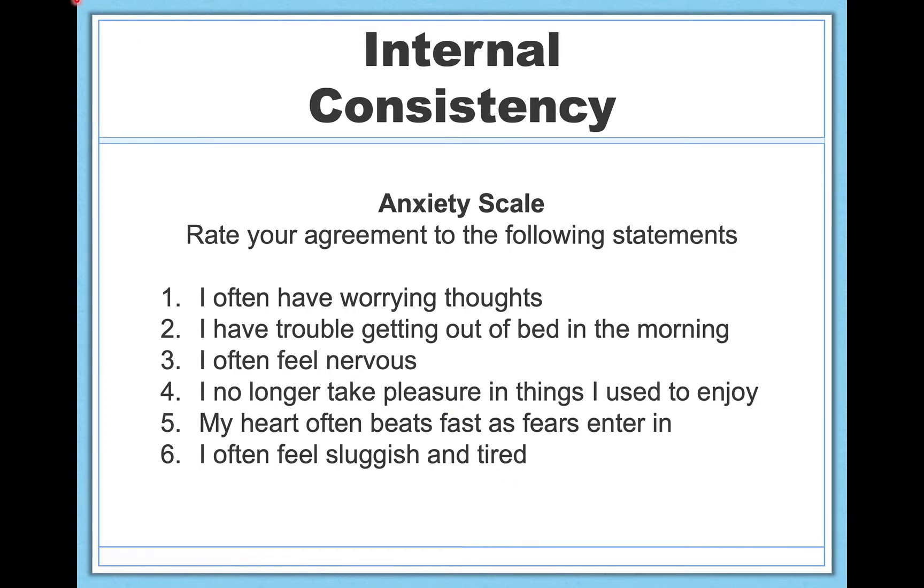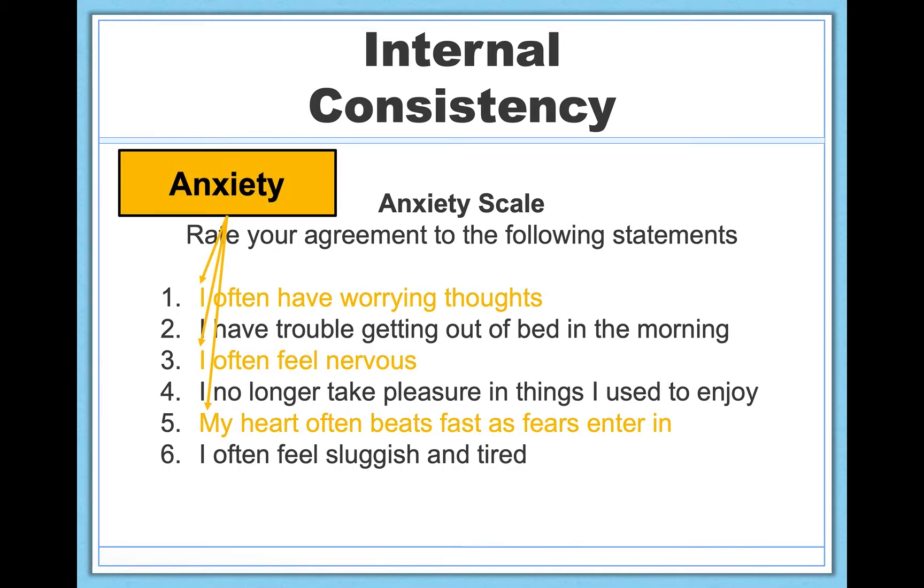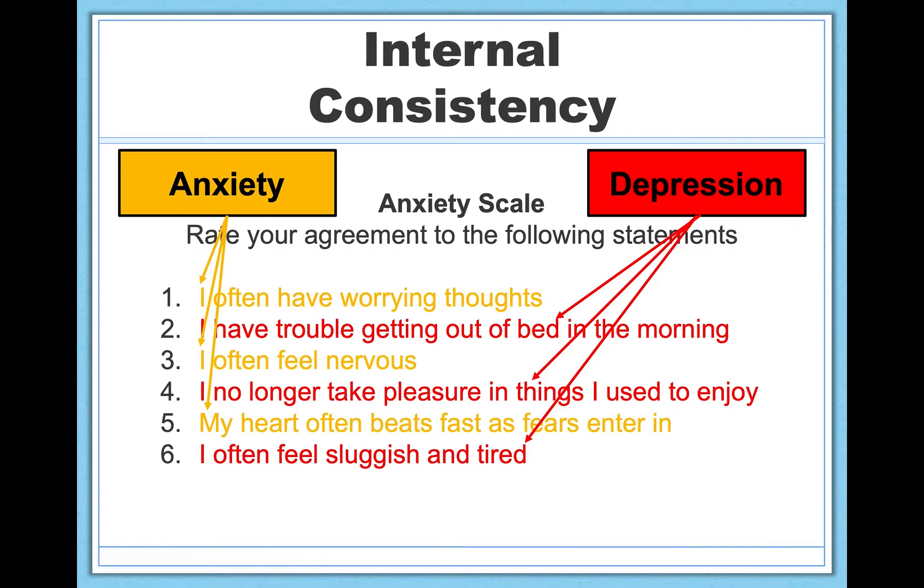So do you notice any potential problems with this anxiety scale? Well, you might have noticed that items one, three, and five measure anxiety, whereas items two, four, and six are actually doing a better job of getting at depression. I have trouble getting out of bed in the morning. I no longer take pleasure in things I used to enjoy. This is what we call anhedonia. And I often feel sluggish and tired. These are all symptoms of depression. So in this case, you can imagine if a person with anxiety takes this test, takes this scale, they're going to respond one way to items one, three, and five. But if they don't have depression, they're going to respond very differently to items two, four, and six. So all six items will not really do a great job of working together. And the result here is going to be poor internal consistency.